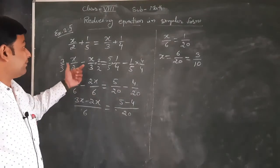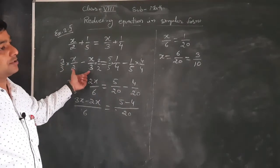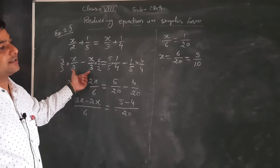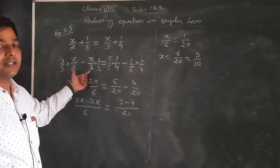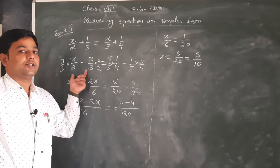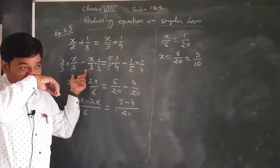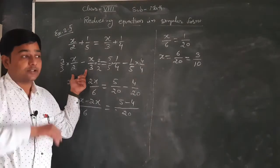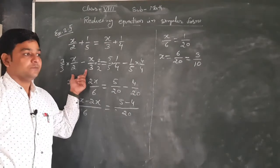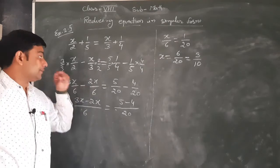We know that two fractional numbers can be added or subtracted when the denominator is the same. Here the denominator is not the same, so we will convert them to have the same denominator.